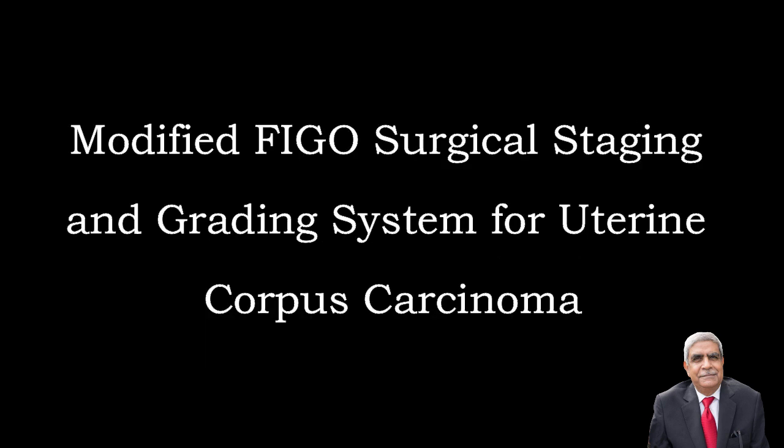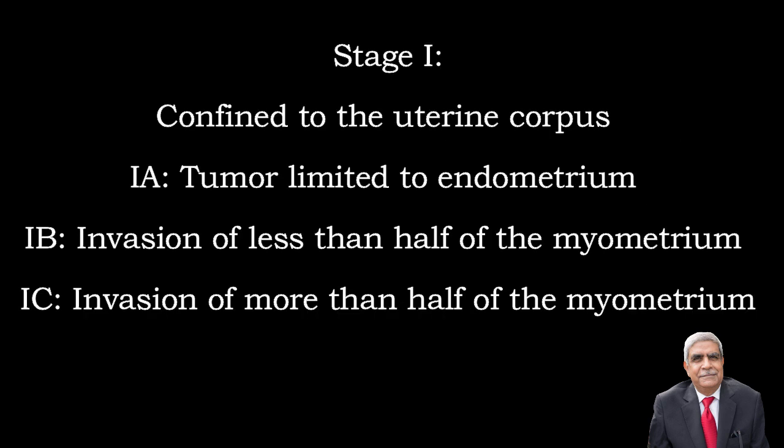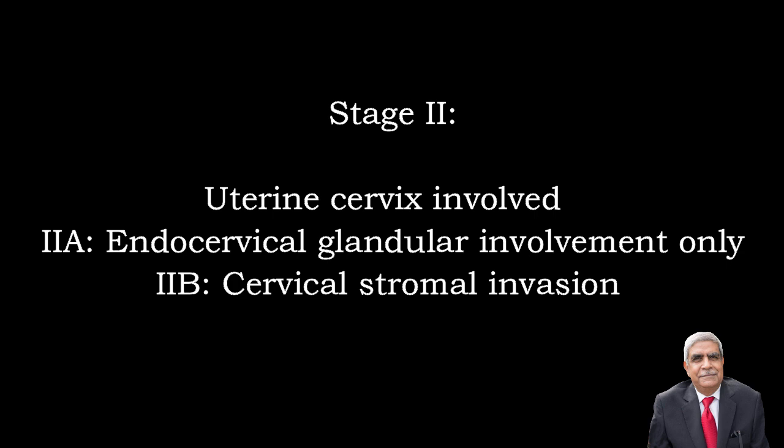The modified FIGO surgical staging and grading system for endometrial carcinoma: Stage 1 — tumor confined to the uterine corpus. Stage 1a — tumor limited to the endometrium. Stage 1b — invasion of less than half of the myometrium. Stage 1c — more than half of the myometrium is infiltrated. Stage 2 — uterine cervix is involved. Stage 2a — involvement of endocervical glands only. Stage 2b — involvement of cervical stroma.